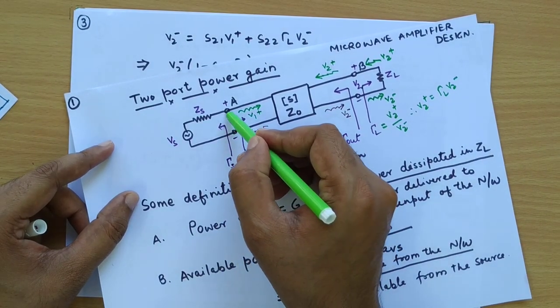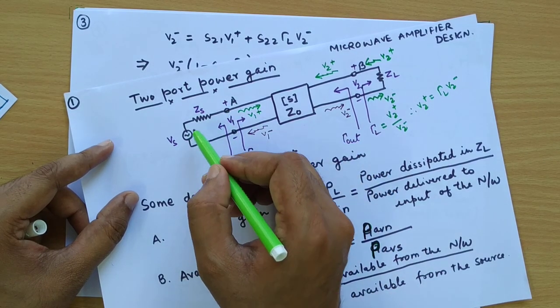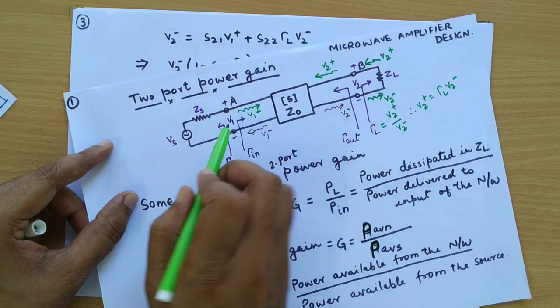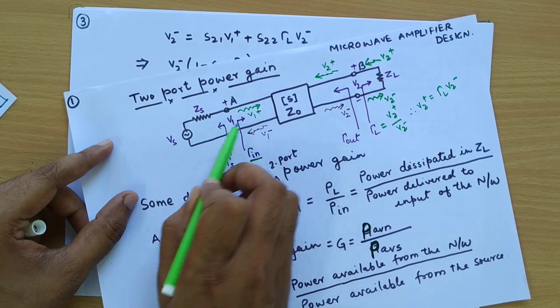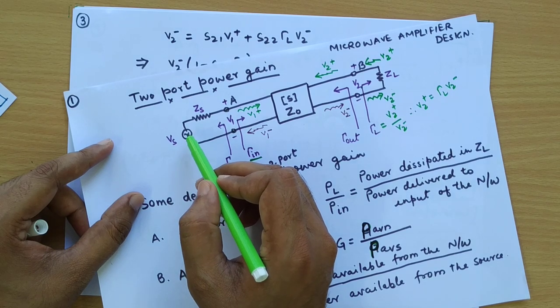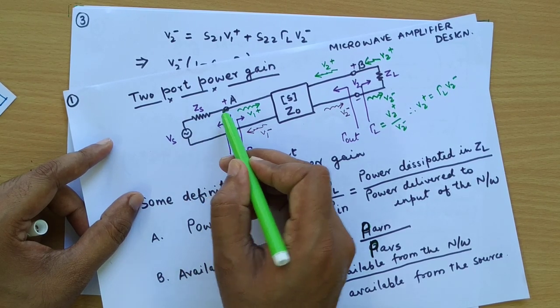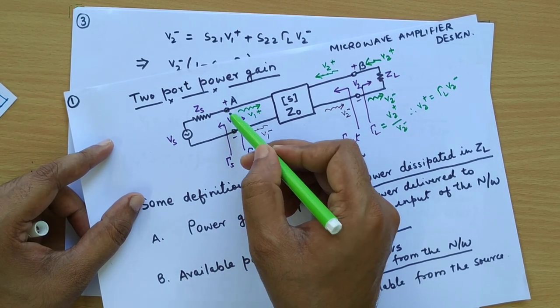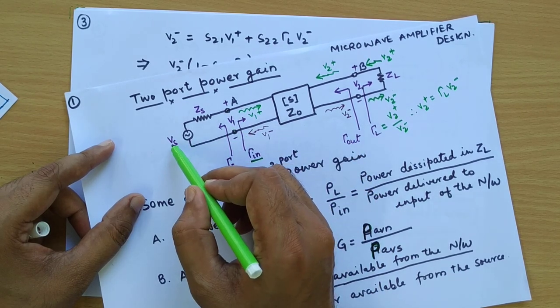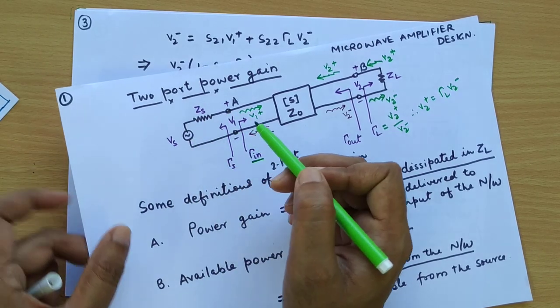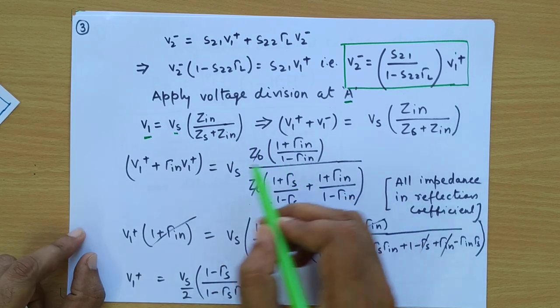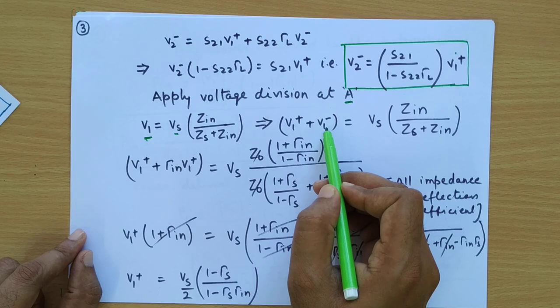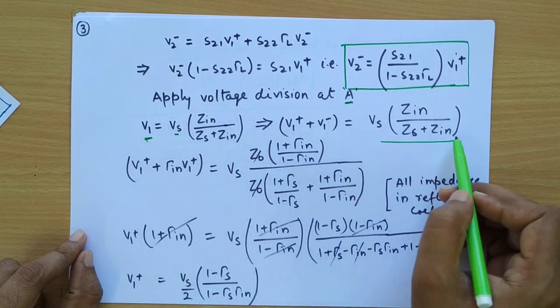Let us take the circuit again. At point A, the source is Vs with impedance Zs, and Zin is the input impedance looking towards the network, corresponding to gamma_in. We can apply voltage division, and Vs will divide into two parts: one across Zs and one across Zin. That voltage across Zin is V1. So V1 equals Vs times Zin divided by (Zs plus Zin). V1 is the total voltage V1 plus plus V1 minus.